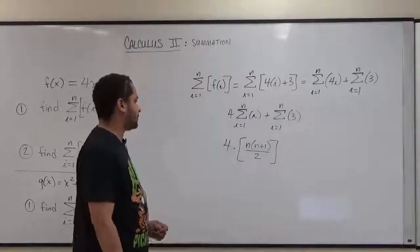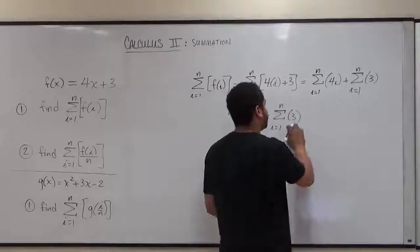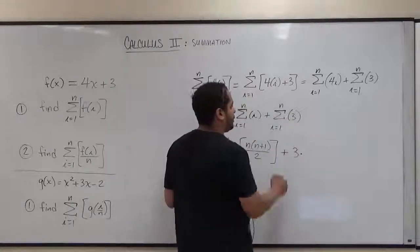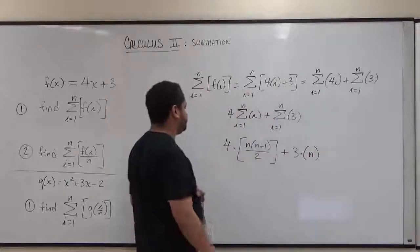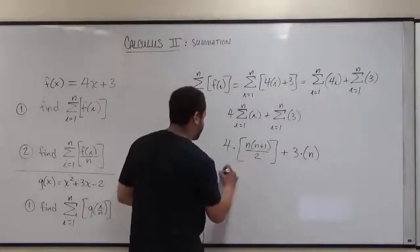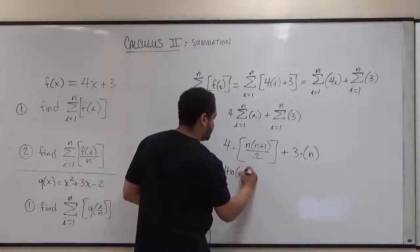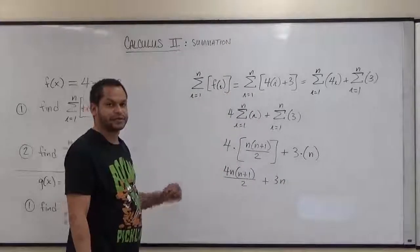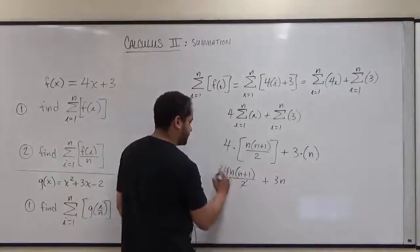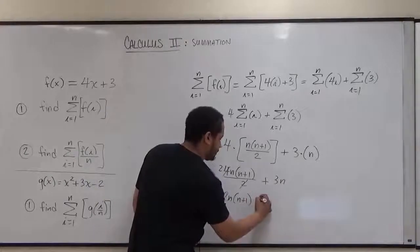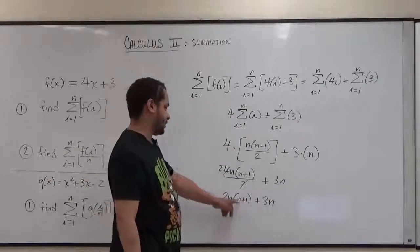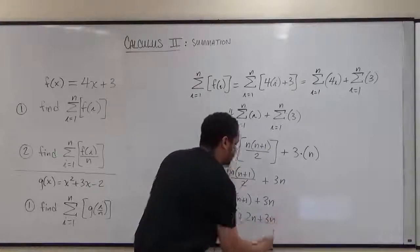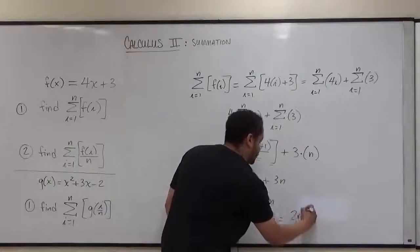We then distribute the terms. For the second term, the formula is just multiplying the constant by the upper limit n. So we get 4n times n plus 1 over 2, plus 3n. We can simplify: the 2 and the 4 reduce to give 2n times n plus 1, plus 3n. Distributing the 2n gives 2n squared plus 2n, and adding 3n gives us 2n squared plus 5n.